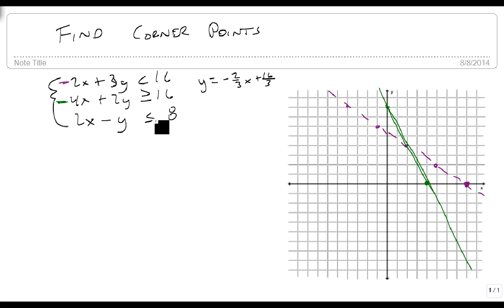And 2x minus y is less than or equal to 8 is going to be at, let's do this one in blue, and he's going to be at minus 8, and he's going to have a slope of minus 2x plus 8, so y is less than or equal to 2x minus 8. So he's going up 2 over 1.